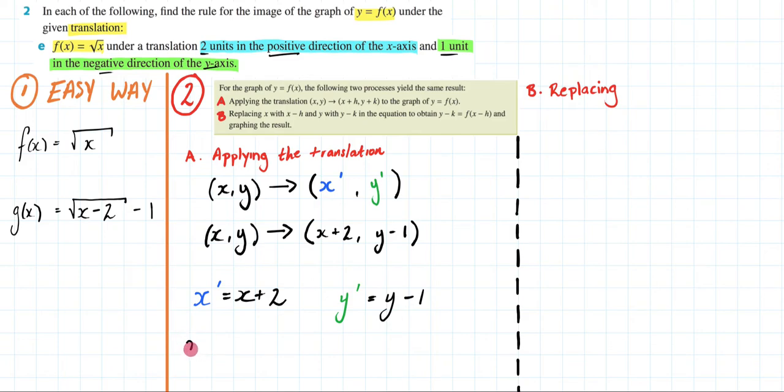I'm now going to rearrange both of these so that x is my subject and y is my subject. So I'm going to get x equals x dash minus two. So I minus two from both sides. And over here I'm going to get y equals, and I'm going to plus one to both sides, y dash plus one.